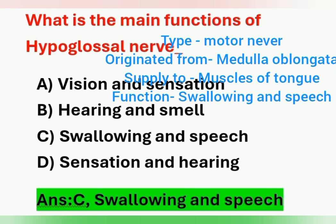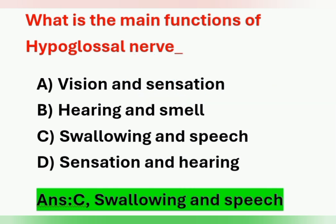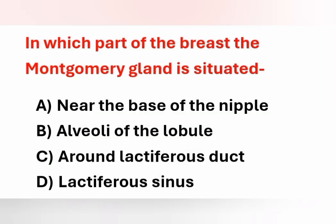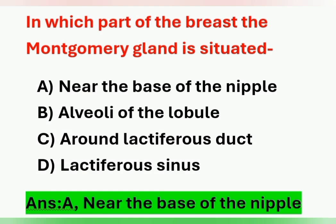Next question: in which part of the breast is the mammary gland situated? Options: A) Near the base of the nipple, B) Alveoli of the lobule, C) Around the lactiferous duct, D) Lactiferous sinus. The mammary gland is situated near the base of the nipple. Option A is the correct answer.